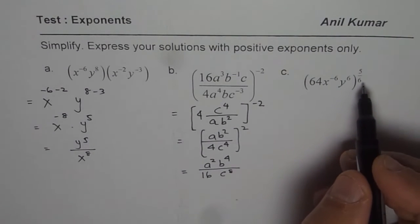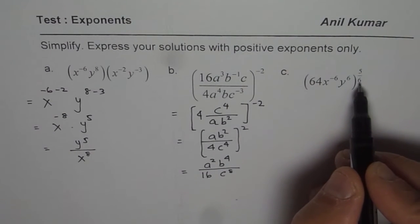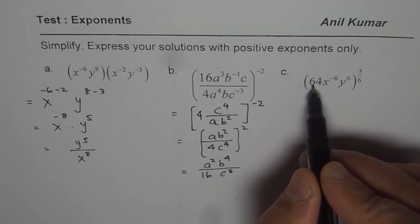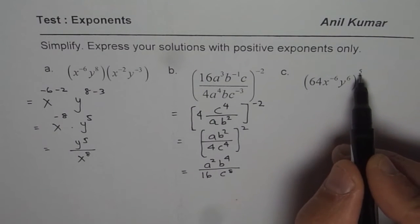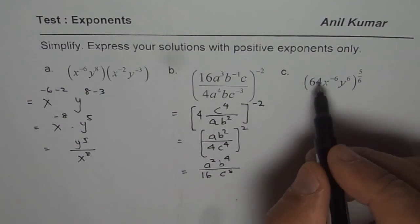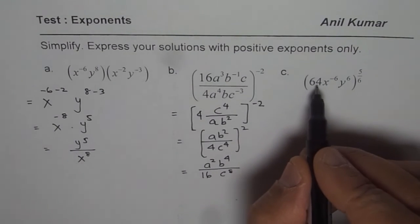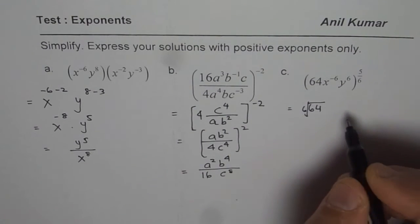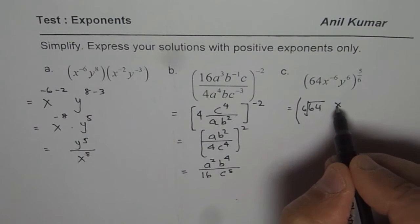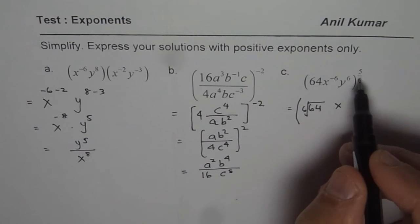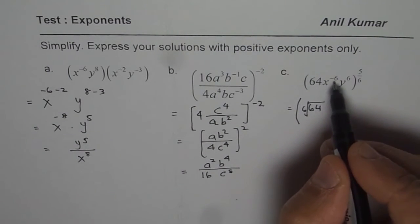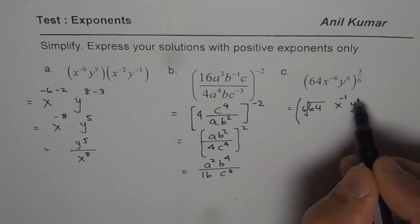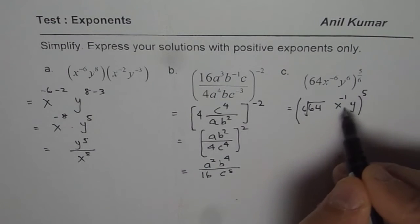In this case, we need to find the 6th root first, then apply the 5th power. Let me write this as the 6th root of 64. For x, we do 1/6 of the exponent, which gives -1. For y, 6 times 1/6 equals 1. Then we apply the power of 5.